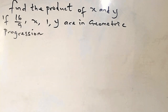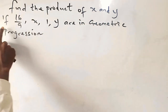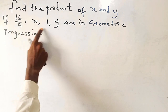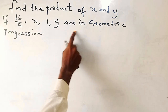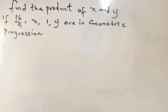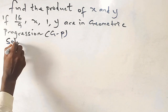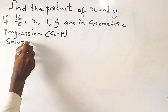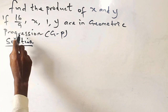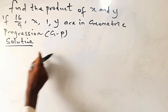The question says: find the product of x and y if 16 over 9, x, 1, y are in geometric progression.